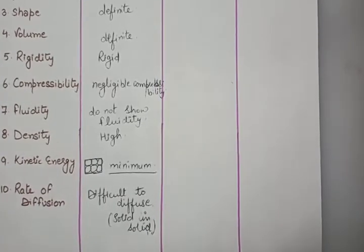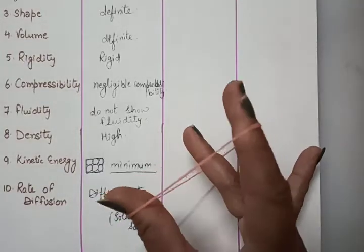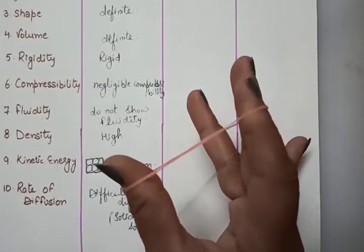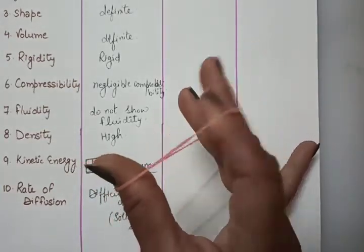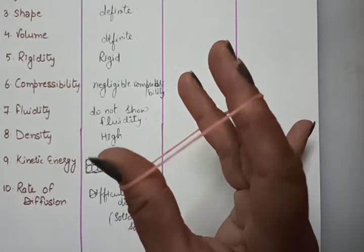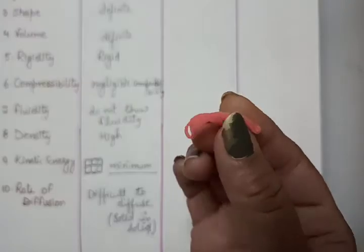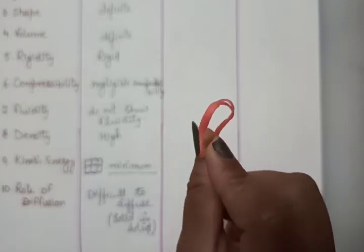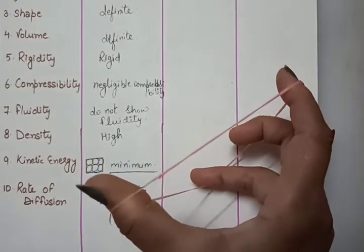There are some questions in your book. The first: what about a rubber band? Can it change its shape on stretching? On stretching, it is changing its shape, and we say solids have a definite shape — so is it a solid? Yes, it is solid. Because on removing the force, it comes back to its original shape. That means it is a solid. And if excessive force is applied, it will break.